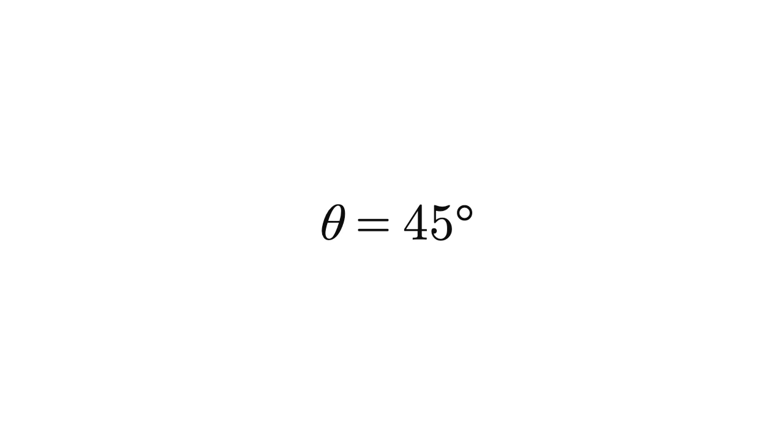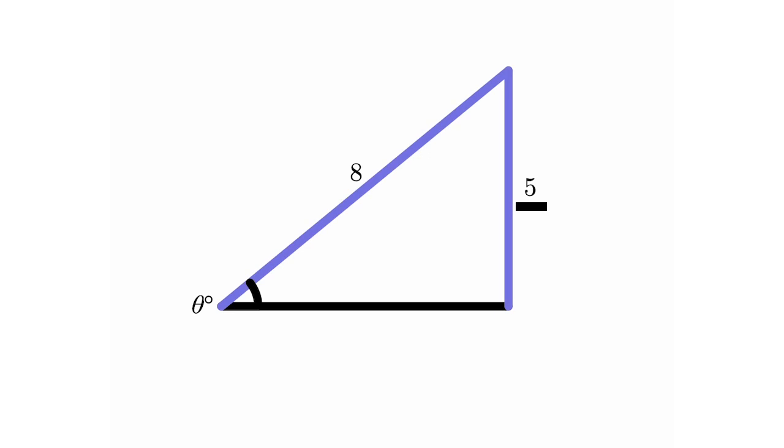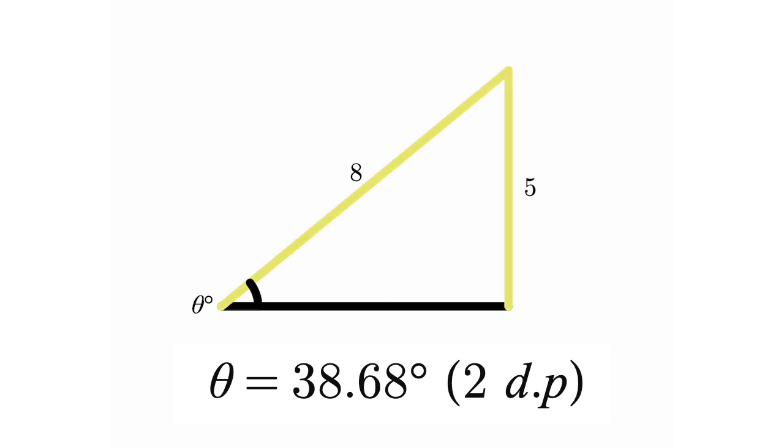Let's try another question. A right-angled triangle has an opposite side of length 5 and a hypotenuse of 8. Find the angle theta. The ratio that involves both the opposite and the hypotenuse is the sine ratio. We can write the following equation. Sine theta equals 5 over 8. This means that inverse sine of 5 over 8 equals theta. And by plugging this into our calculator, we should find that theta is equal to 38.68 degrees to two decimal places.